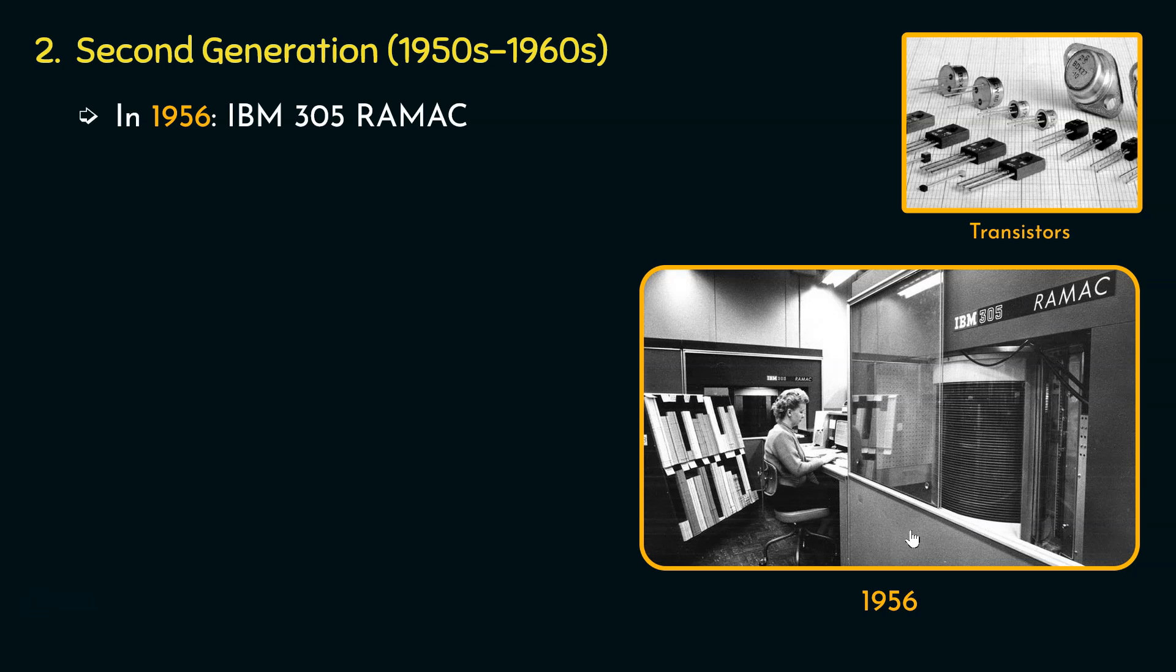The disk storage unit, or the hard disk drive, had the storage capacity of just 5 megabytes, although it consisted of 50 24-inch platters. Additionally, due to random access, it had the ability to access any piece of data on the disk directly, without having to sequentially read through the entire storage medium. This was a major improvement over earlier storage technologies that required sequential access.